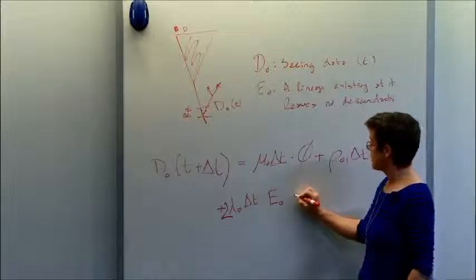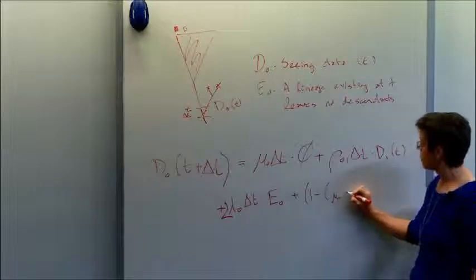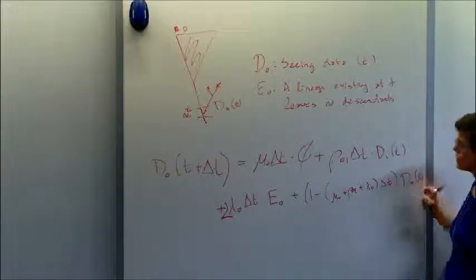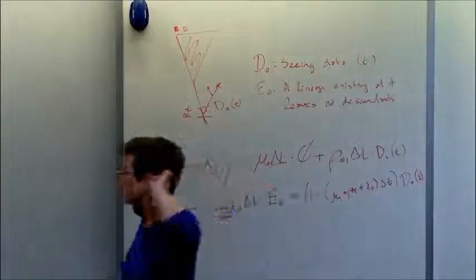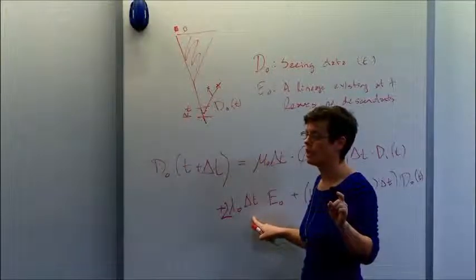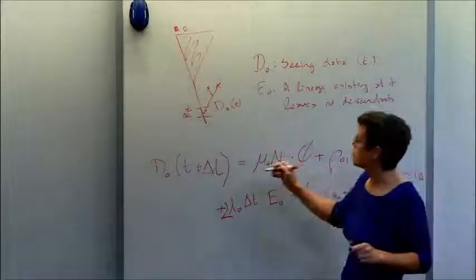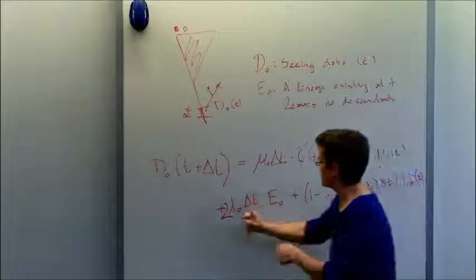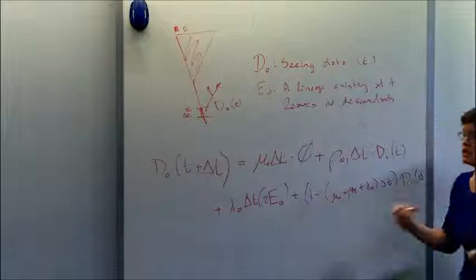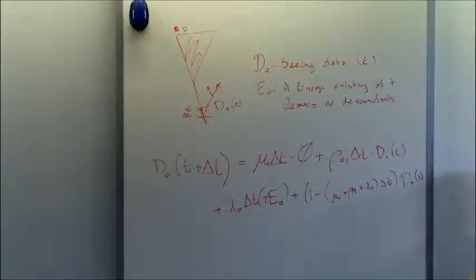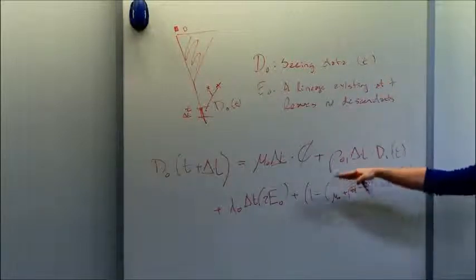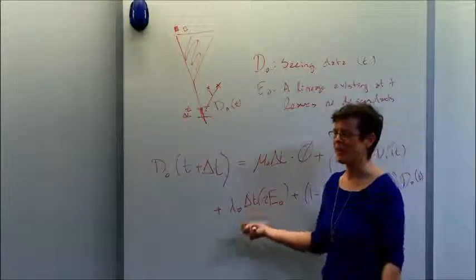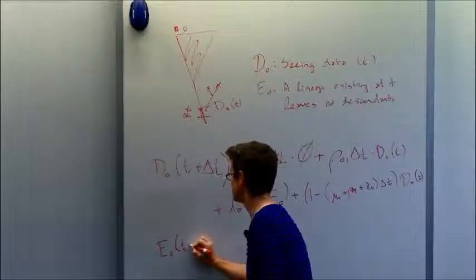You shrink the time interval, turn it into a differential equation, and numerically solve it down the tree. I introduced another variable along the way, so we also need to do the same for E of zero. For E: a lineage alive at time T will go extinct and leave no descendants. Three things could happen in a small interval: an extinction event — in which case the probability becomes one; a transition to the other state — the lineage still has to go extinct, now in state 1; or a speciation event — now two lineages must both go extinct, giving us the square of the extinction probability. Someone noted the speciation term needs to include D, because you also have to explain the branch that survives. Correct.